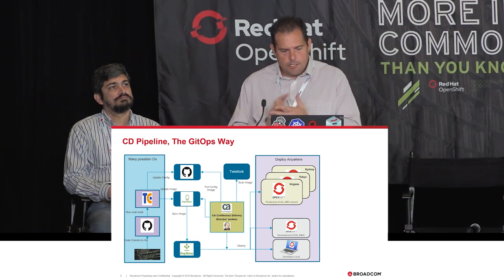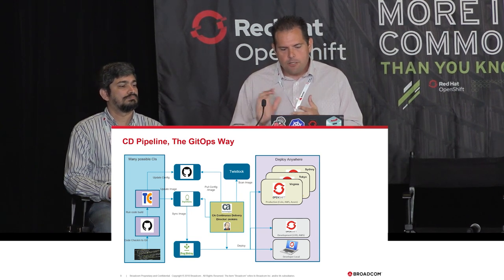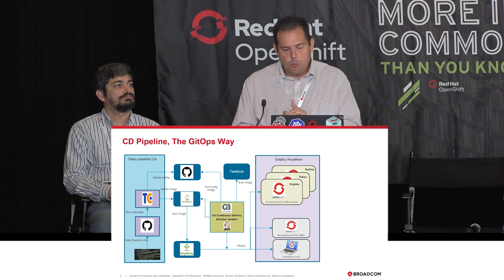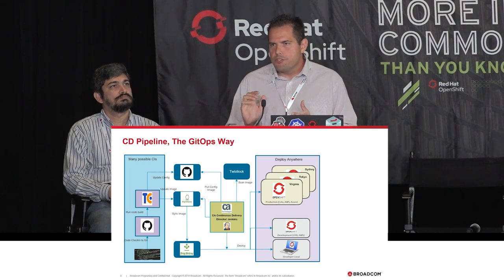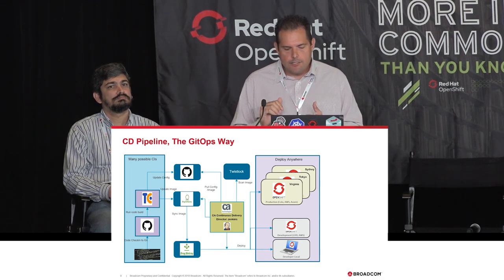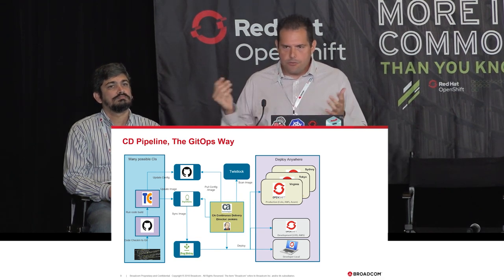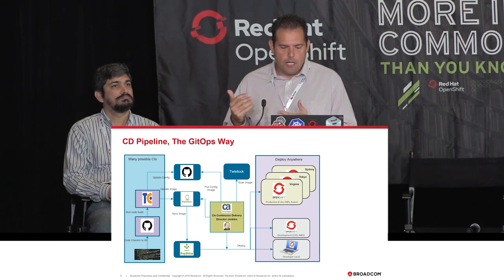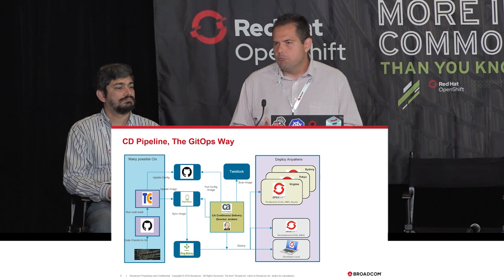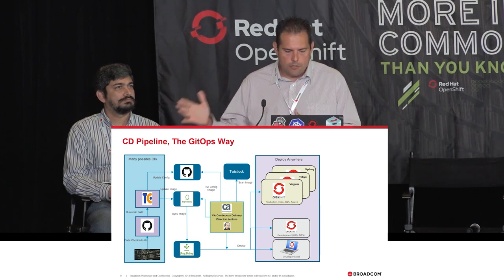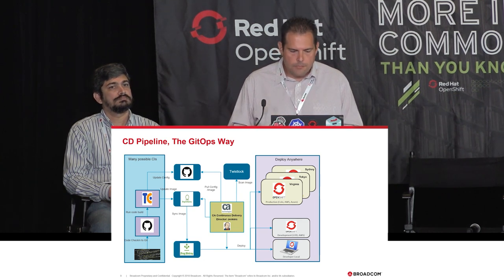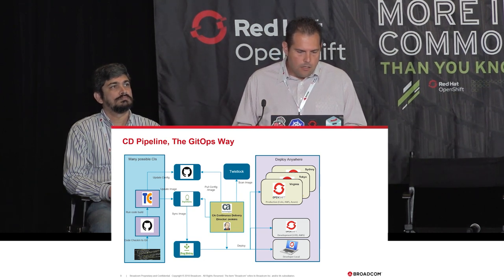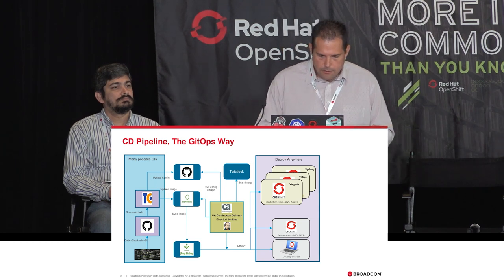On the right-hand side, it doesn't matter what type of environment or where OpenShift is running. As long as we can reach it through a network, we can deploy to it — whether it's on the cloud or on-prem.